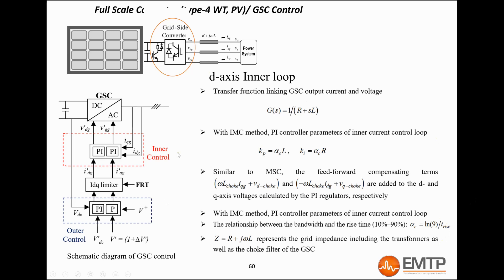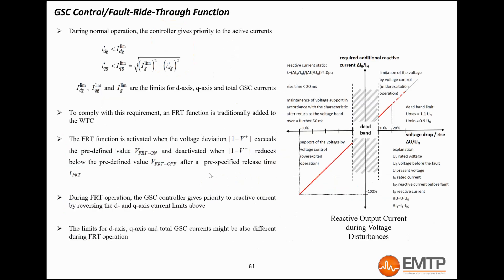The voltage control is at the converter terminal, but the voltage measured is after the choke filter. Therefore, a feed-forward compensation is done before putting the converter voltage reference back to the ABC domain.